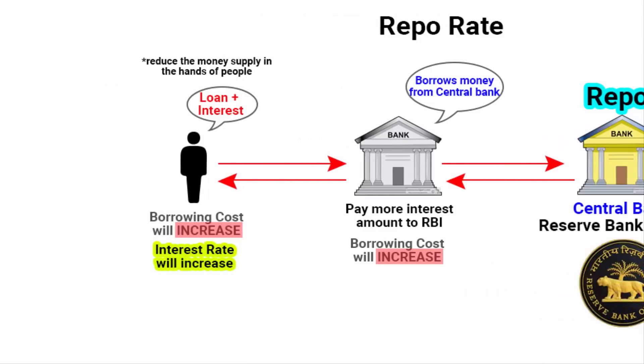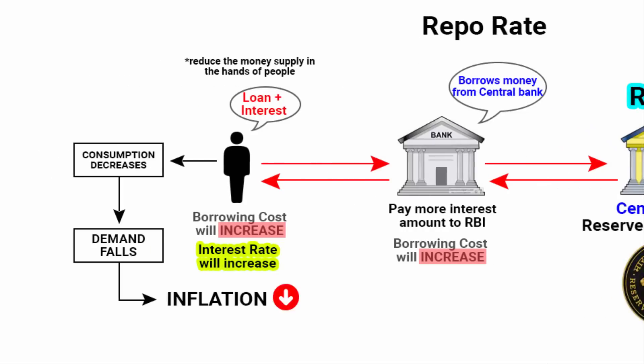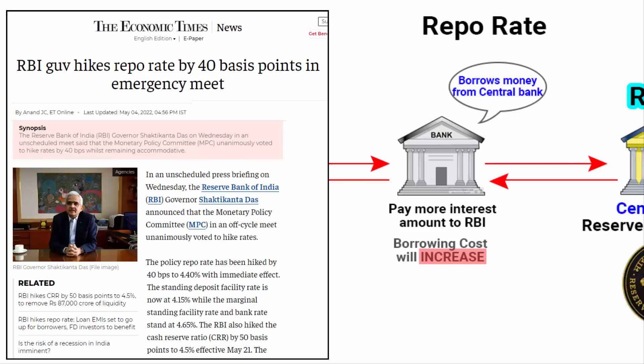This is a method by the central bank to reduce the money supply in the hands of people. When there is less money in the hands of people, consumption will decrease, which will eventually lower demand and finally inflation decreases. Inflation means price rise — if demand is low, then naturally the prices of commodities will go down. That is why RBI has raised the repo rate by 40 basis points, to combat inflation.